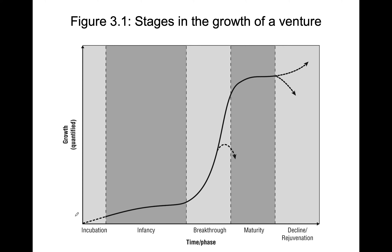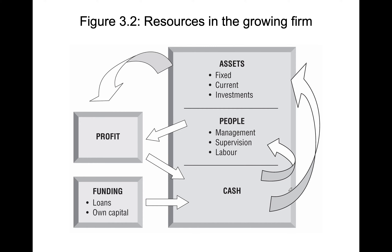The stages of growth diagram summarizes the cycle: incubation, infancy, breakthrough, maturity, and decline or rejuvenation. Regarding resources in the growing firm, capital and human resources ultimately impact profit. Depending on whether the entrepreneur prioritizes sustainability or greater risk-taking, this could lead to further investment in fixed or current assets, or in additional human resources.